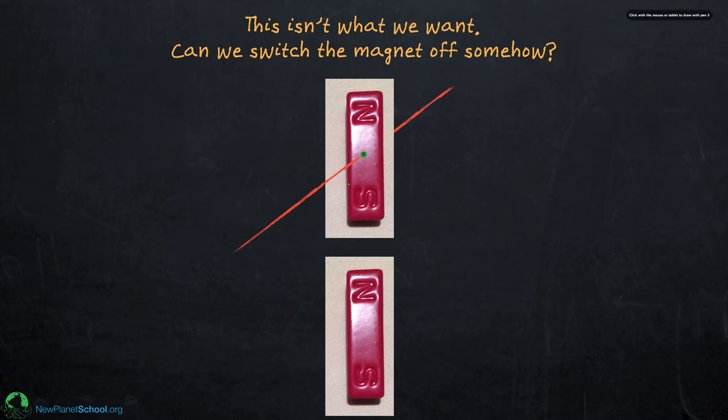So, let's ask this question. Can we switch the magnet off somehow? If we could switch the magnet off, we could make it be pulled towards the lower magnet when we want it to be, but not be pulled towards the lower magnet when we don't want it to be. Is it possible to think about doing that? Let's think about it.